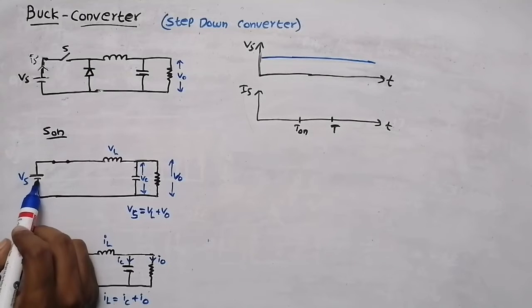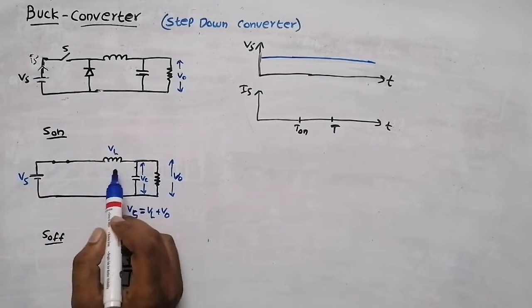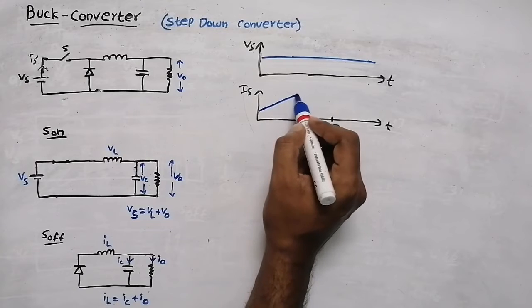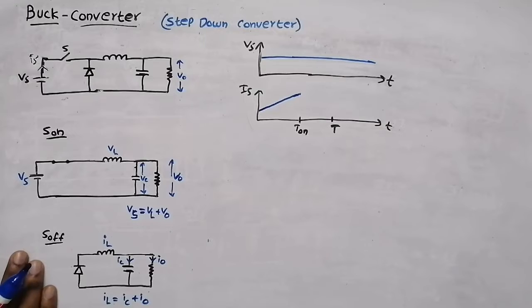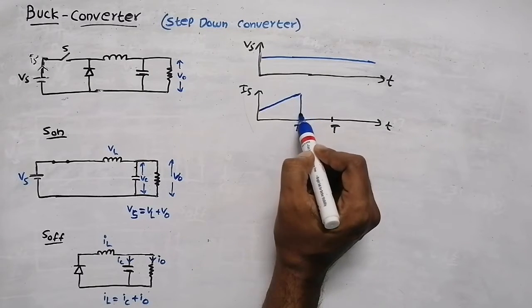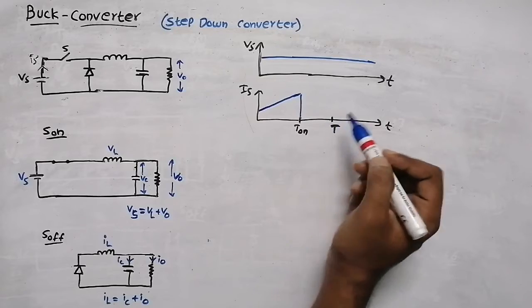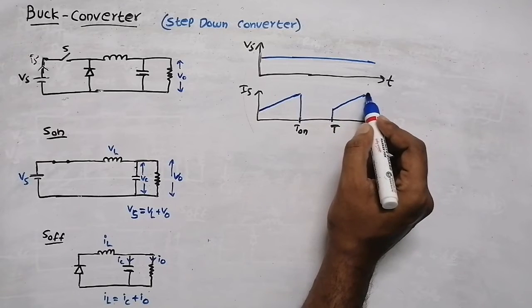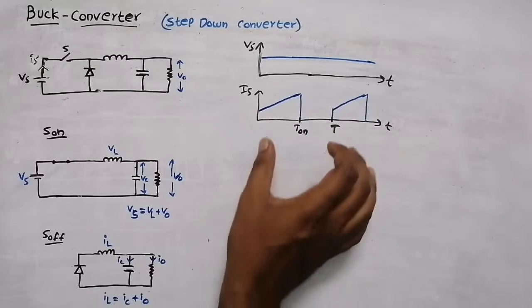When the switch is on, the source voltage provides source current that flows through the inductor, capacitor, and resistor. Since all elements are linear, the current rises linearly until T_on ends. When the switch is off, the source is disconnected, so there is no source current — the current falls to zero. This pattern repeats each cycle.